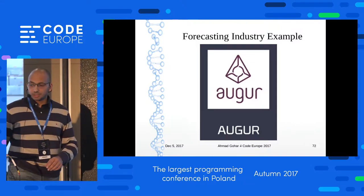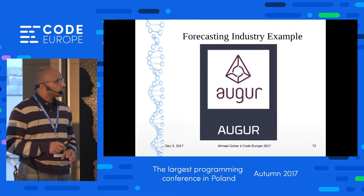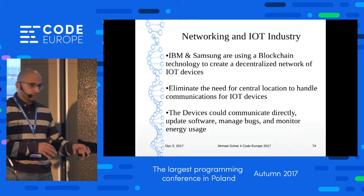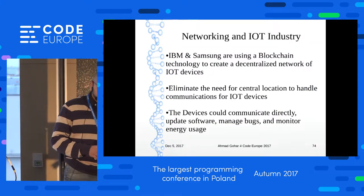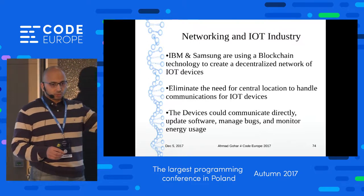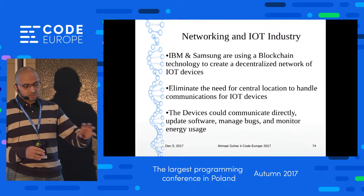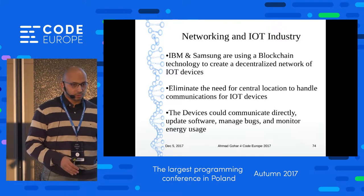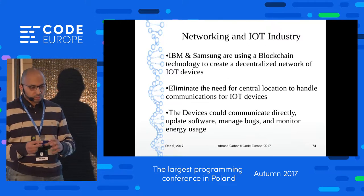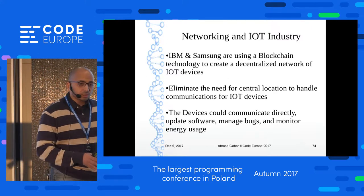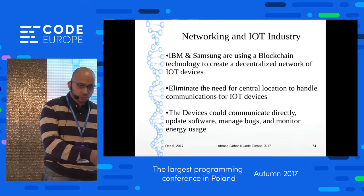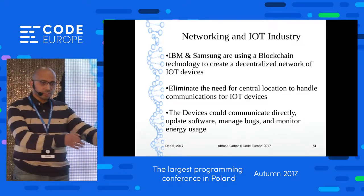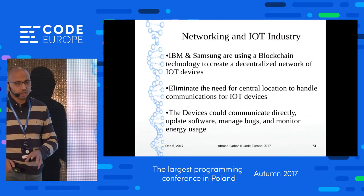Network and IoT industry — IBM and Samsung are using blockchain technology to create a decentralized network of IoT devices. IoT devices are decentralized and scattered all over, but they currently send data to a centralized repository — a broker, MQ, or something like that. Now IBM and Samsung are thinking: IoT is decentralized, and we need to align its decentralized nature with the decentralized nature of blockchain rather than collecting its data in a centralized manner.